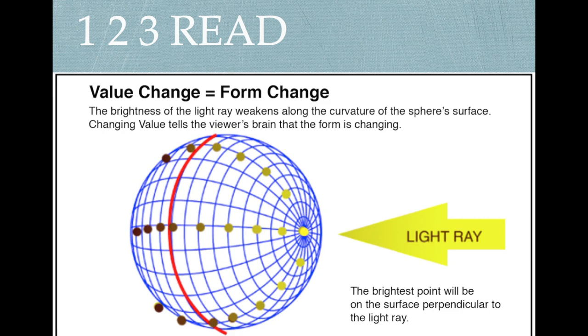Now, part of that rule is what's called a 1-2-3 read. We'll get into the numbers and what they mean later. But value change equals form change. Value change equals form change. Value is just a fancy word for darks and lights, whether it's in black and white or if it's in color.